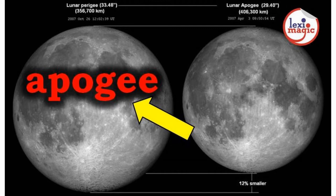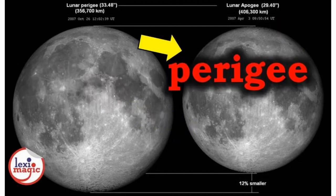Apogee is a point in the orbit of a moon or any such satellite that is farthest from the center of a planet. Perigee is a point in the orbit of the moon or any such satellite that is nearest to the center of the planet.